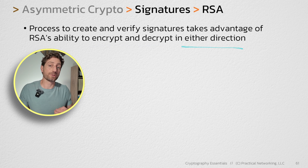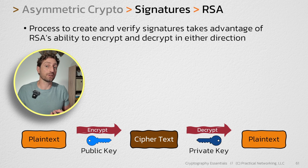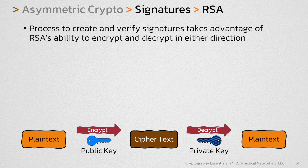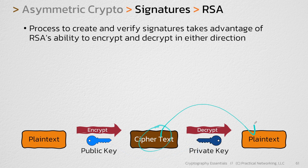Earlier in the series, when we were talking about asymmetric encryption and RSA, I showed you an illustration that looks like this. I told you that RSA can take a value, the public key, and use that value to encrypt some plaintext to turn it into some ciphertext. Then the correlating private key can be used to take that same ciphertext and turn it back into the plaintext.